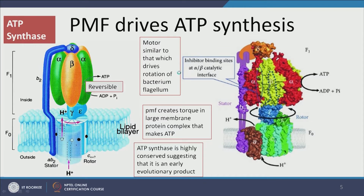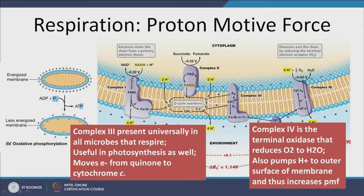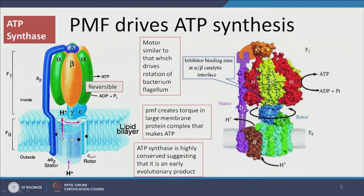What is the use of having this PMF? How does this proton motive force convert into energy for the cell? ATP — adenosine triphosphate — is the molecule that the cell uses as its energy currency. Whenever energy is required, ATP converts into ADP and releases energy. Whenever there is excess energy, ADP converts into ATP and stores energy. Thus ATP is the currency of energy in the cell, and it is produced by using this proton motive force.